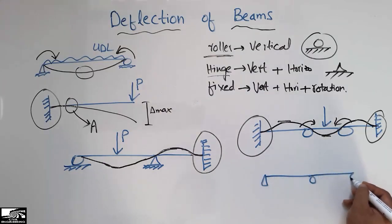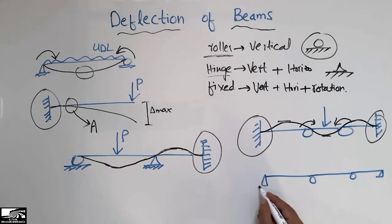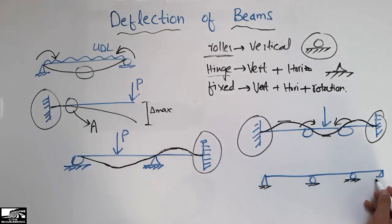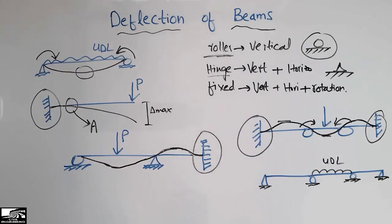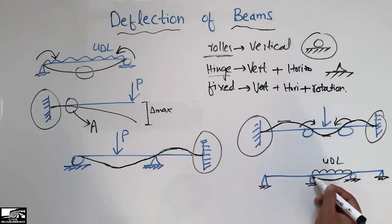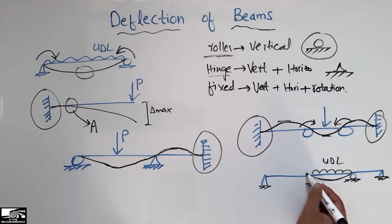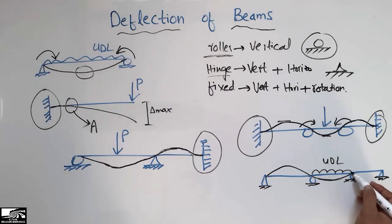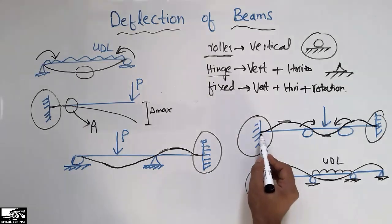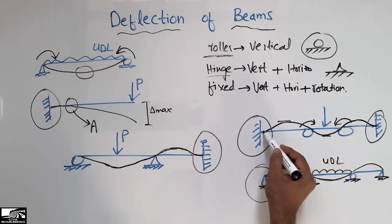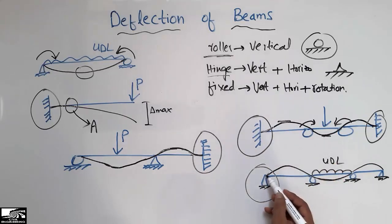Now consider this beam with a hinge support, a roller support, another roller support, and another hinge support, with a uniformly distributed load acting on a span. The deflected shape starts at the first hinge, maximum deflection is seen at the midpoint, and then it moves back to the roller support and jumps up again. There is rotation at the hinge supports. The deflected shape diagram starts directly from the support for hinge and roller supports, since they cannot resist rotation, whereas for a fixed support the diagram starts away from the support.